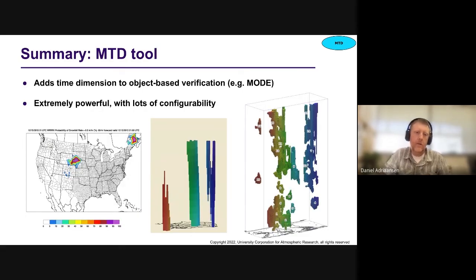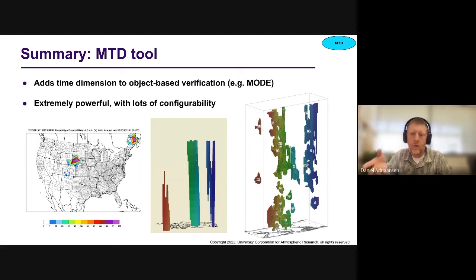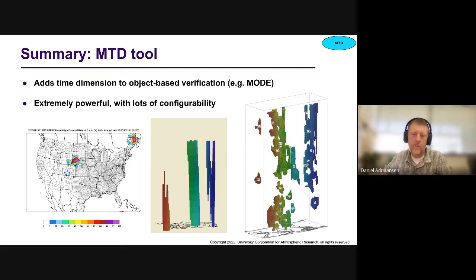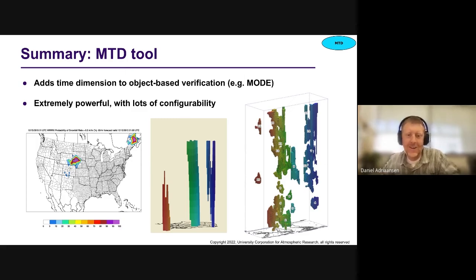Just a quick summary: MTD adds a time dimension to object-based verification. It's really powerful and has lots of configurability, just like the MODE tool. I've just shown a couple of other examples — probabilistic, defining probabilistic objects, and also a really long climate-type simulation. Our stack of proverbial pancakes is now almost indistinguishable because there are so many vertical slices due to the number of time steps in the simulation — just to highlight how long the time dimension can really be in some of these applications. I'll end there to try and leave some time for questions.